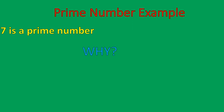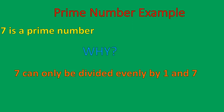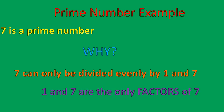So seven is a prime number. Why? Because seven can only be divided evenly by one and by seven. So one and seven are the only factors of seven. Therefore, it's prime — it has no other factors other than itself and one. That's the definition of a prime number.